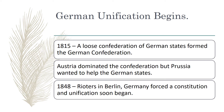German unification follows a similar pattern. In 1815, there was a loose confederation of German states called the German Confederation. Austria dominated this confederation, but Prussia wanted to help form a German nation. Prussia had a mainly German population and a superior army by 1848. Also in 1848, rioters in Berlin forced a call for a constitution, and unification of Germany soon began.